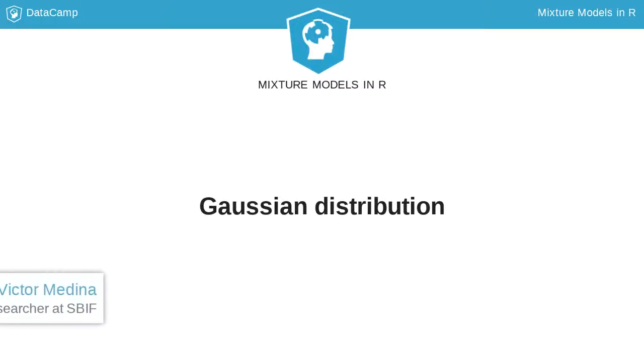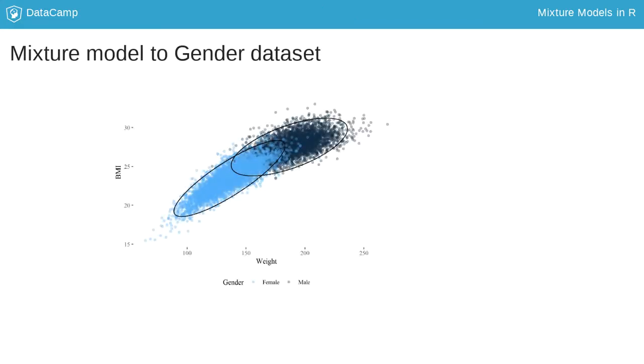In the last lesson, we actually fit a mixture of two Gaussian or normal distributions. Here are the real gender labels of each observation and also the areas depicted by the ellipses, which represent where the most probable zones are to find each subpopulation according to the fitting.